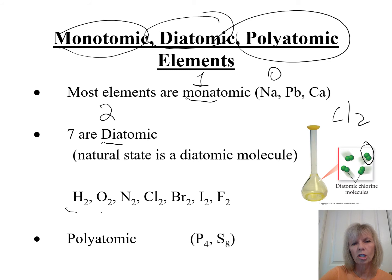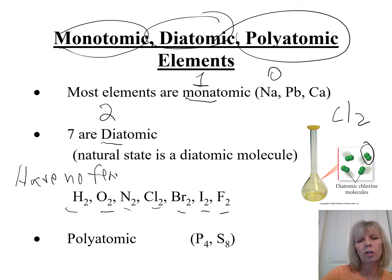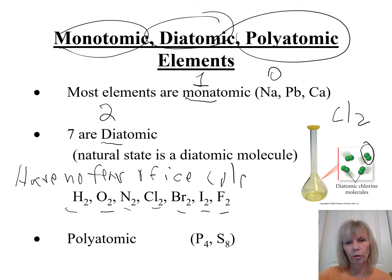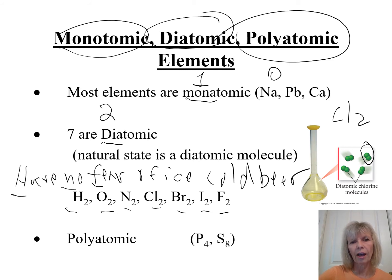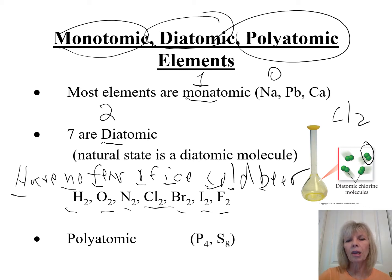A helpful mnemonic to remember the seven diatomic elements is: 'Have No Fear Of Ice Cold Beer' — the first letters give H, N, F, O, I, C (for Cl, chlorine), and B (for Br, bromine). Note that C alone would be carbon, but the diatomic is Cl₂ (chlorine), and B alone would be boron, but the diatomic is Br₂ (bromine) — 'beer' starts with B and ends with R to help remember bromine.